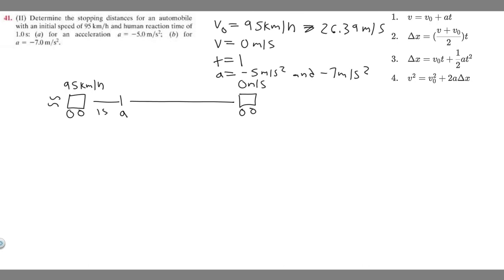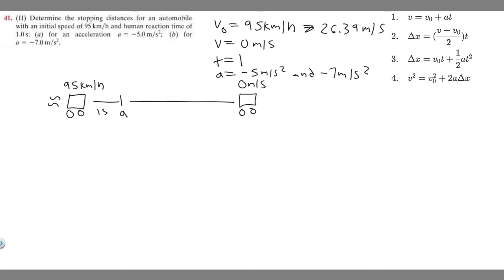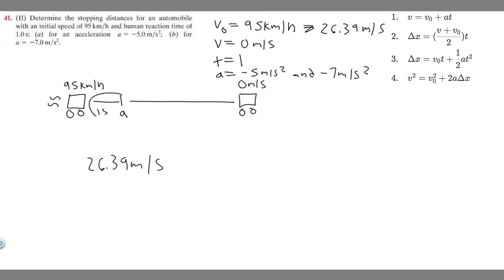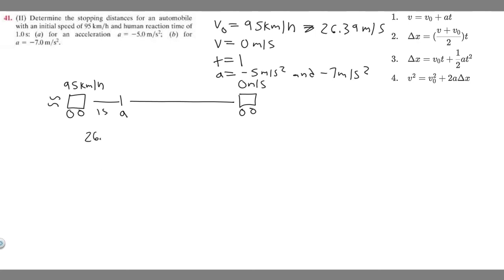Now we can solve. We need to find the total stopping distance, which has two parts. First, find the reaction distance — the distance traveled during the 1-second reaction time before braking. Since the car is moving at 26.39 m/s with no braking for 1 second, the reaction distance is simply 26.39 meters.